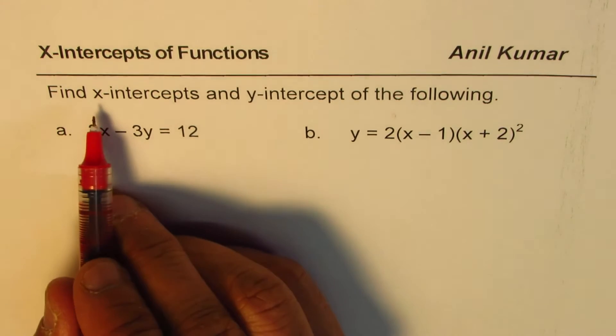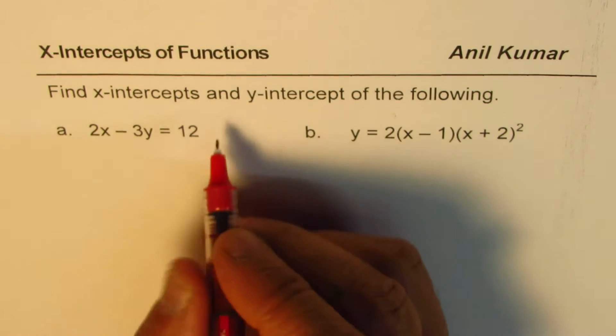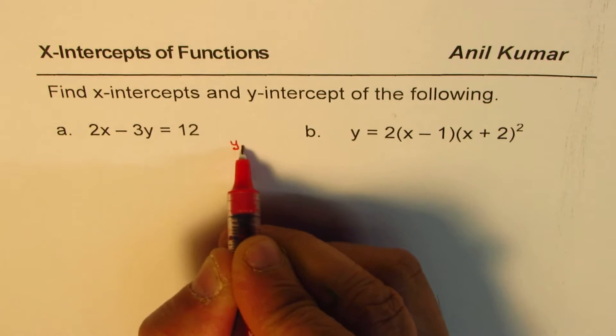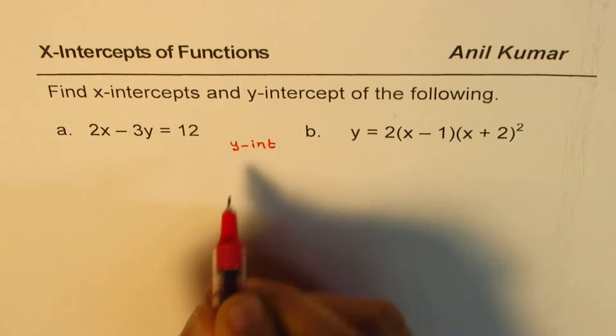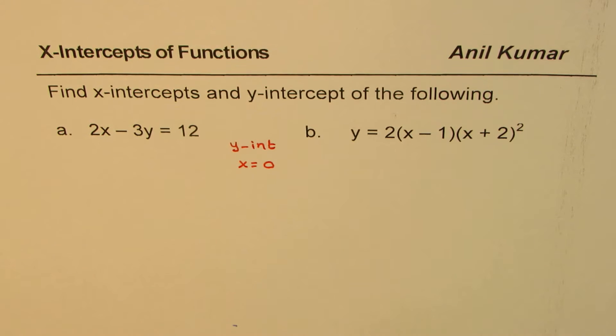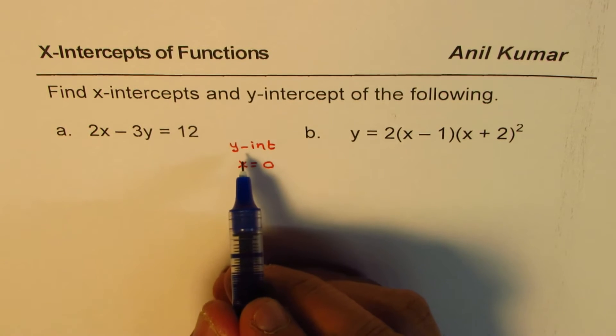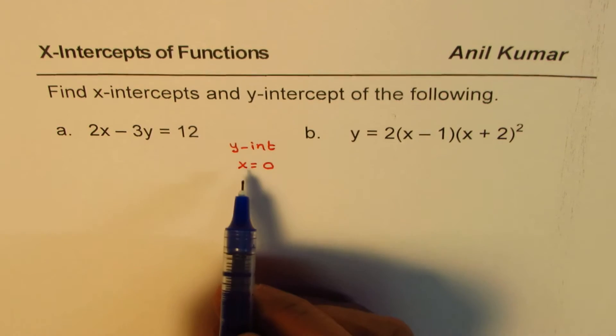Let's begin with the y-intercept, that's simpler. What is y-intercept? Y-intercept is when x is equal to 0. A point on the y-axis where the graph crosses or touches y-axis.